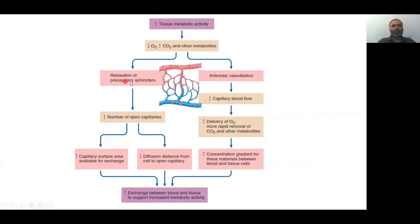To show you how these pre-capillary sphincters and the caliber, the diameter of arterioles, is actually a big determinant of what happens in tissues when there is a fluctuation in metabolic activity. This flow chart is of increased tissue metabolic activity.